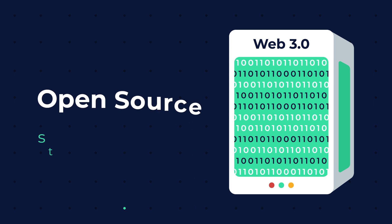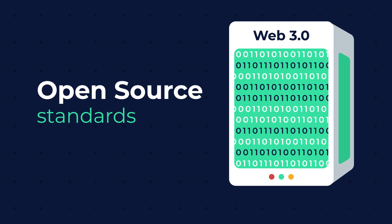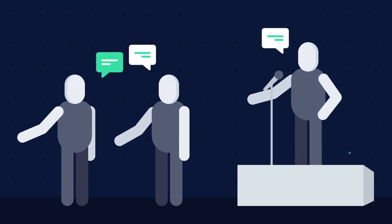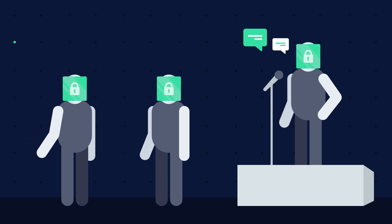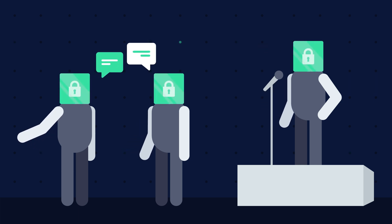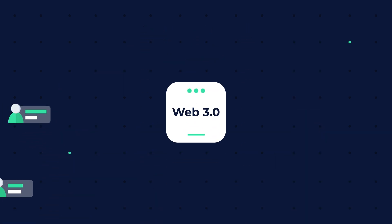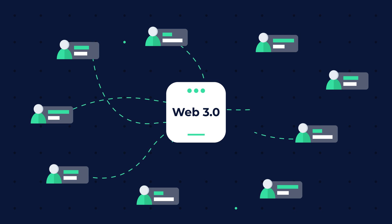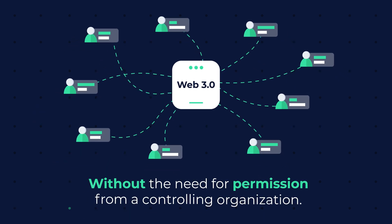Web 3.0 is open in the sense that its systems are developed on open-source standards. The network is trustless — it offers freedom to users to interact publicly and privately without an intermediary exposing them to risks. The network is also permissionless, meaning anyone can interact with each other via lightning-fast, seamless interoperable peer-to-peer networks, without the need for permission from a controlling organization.